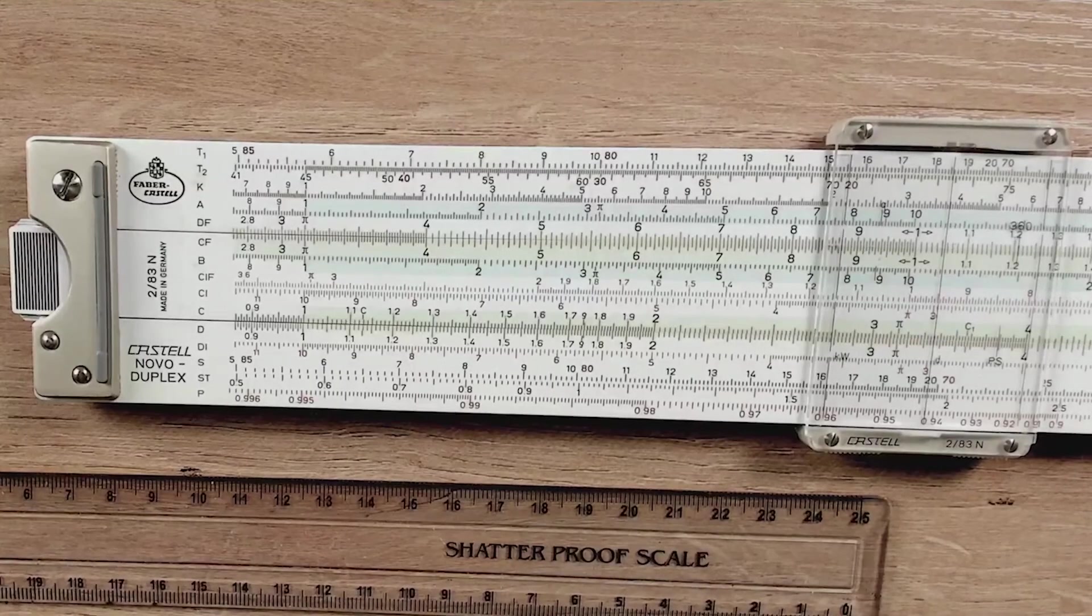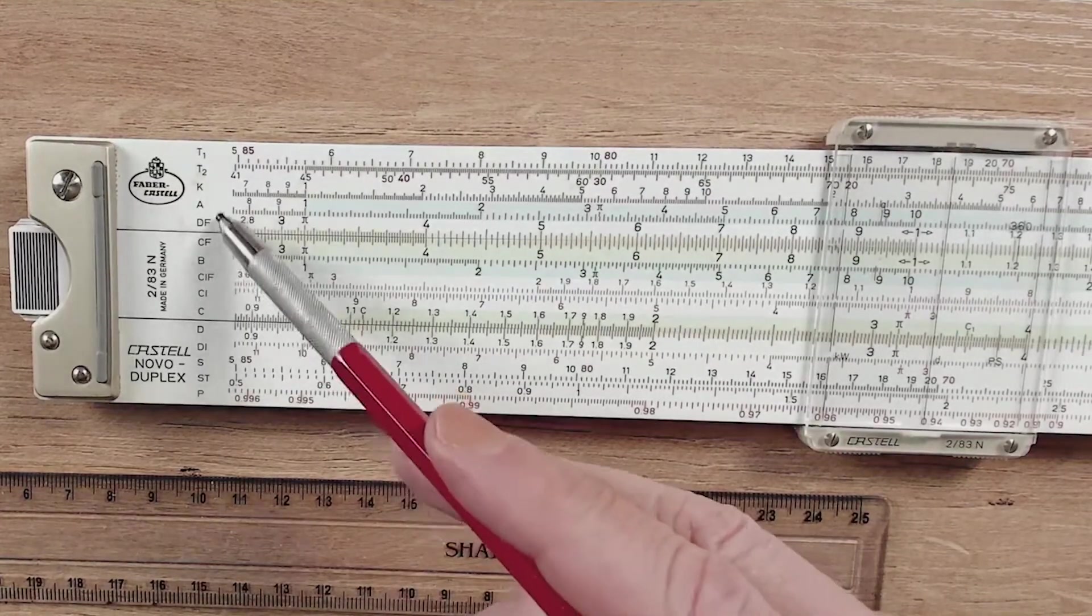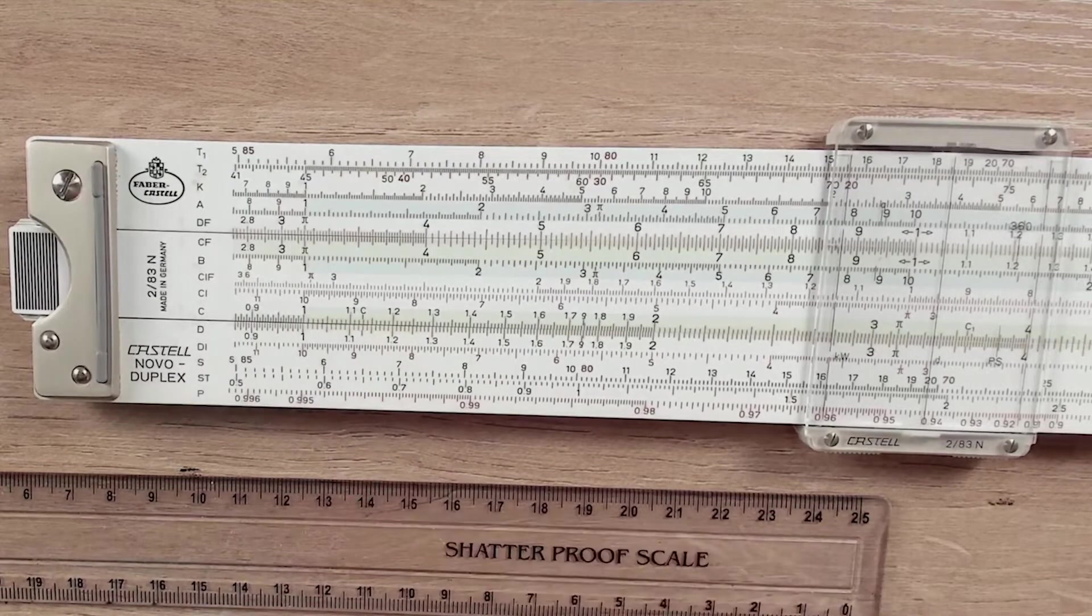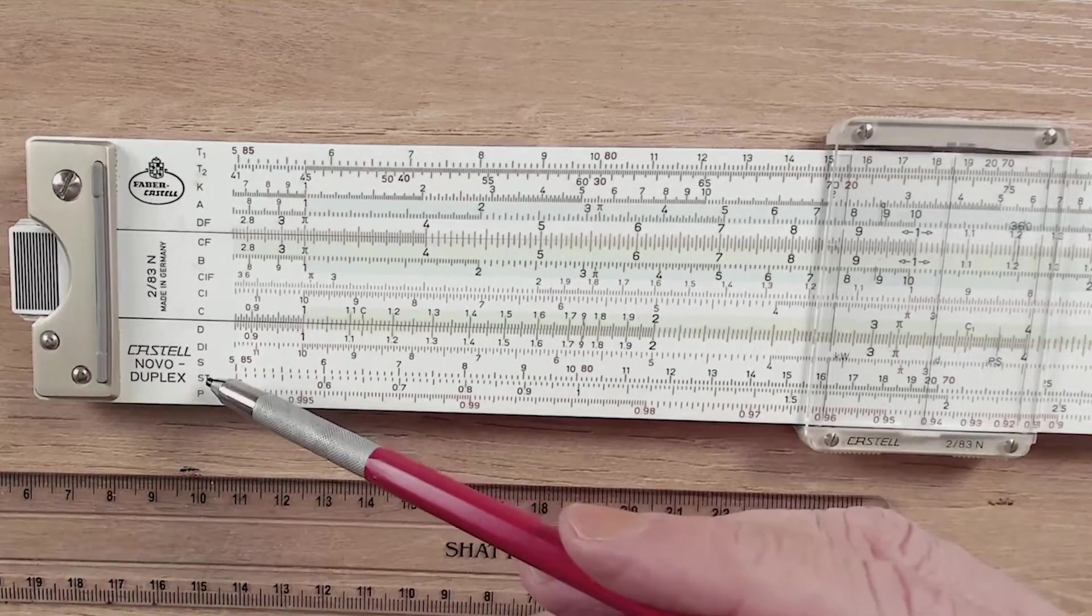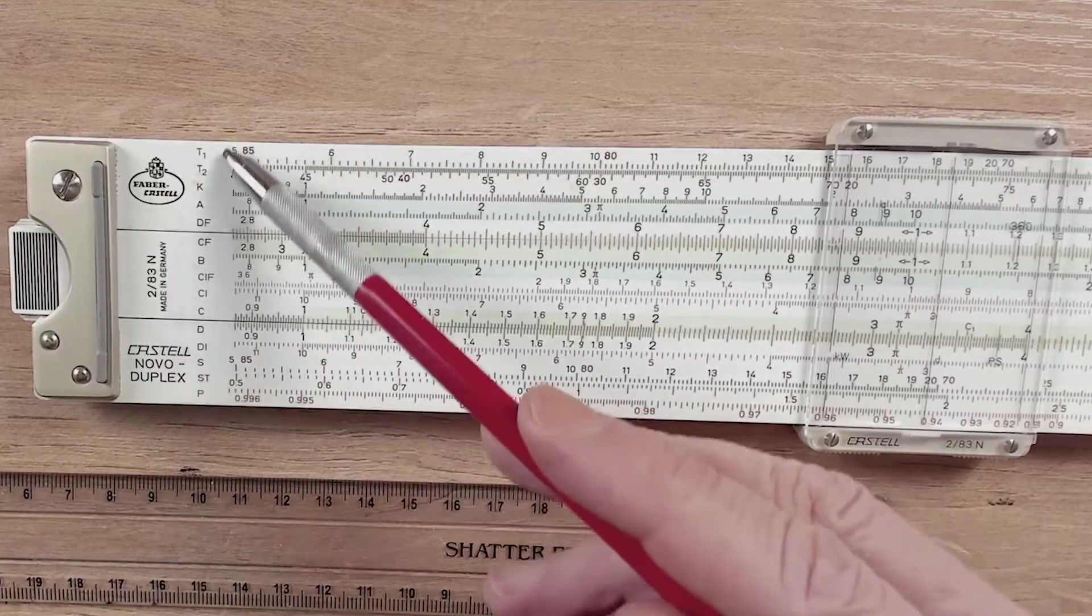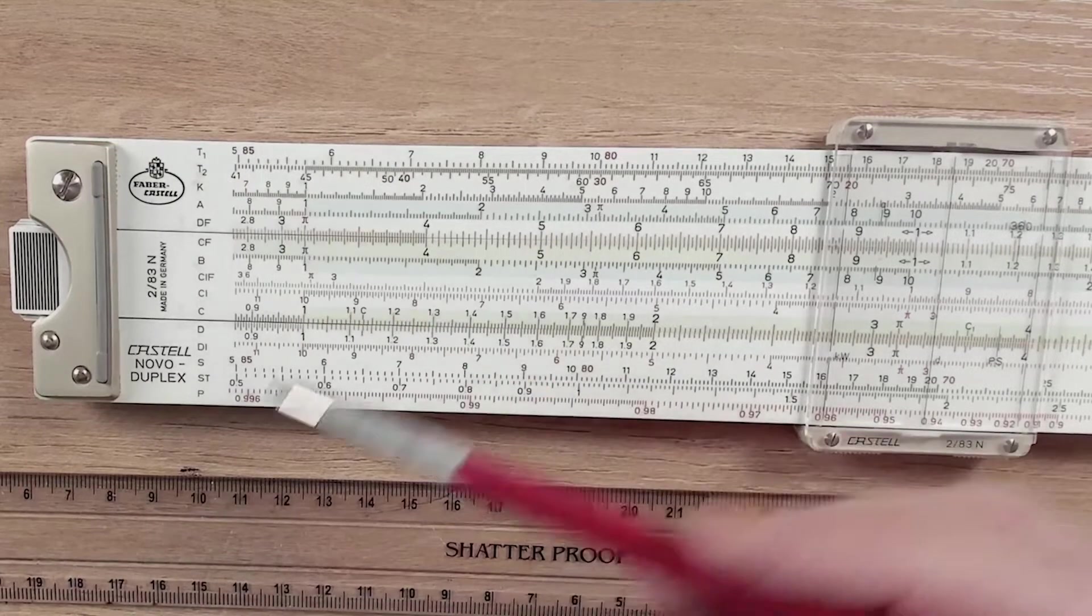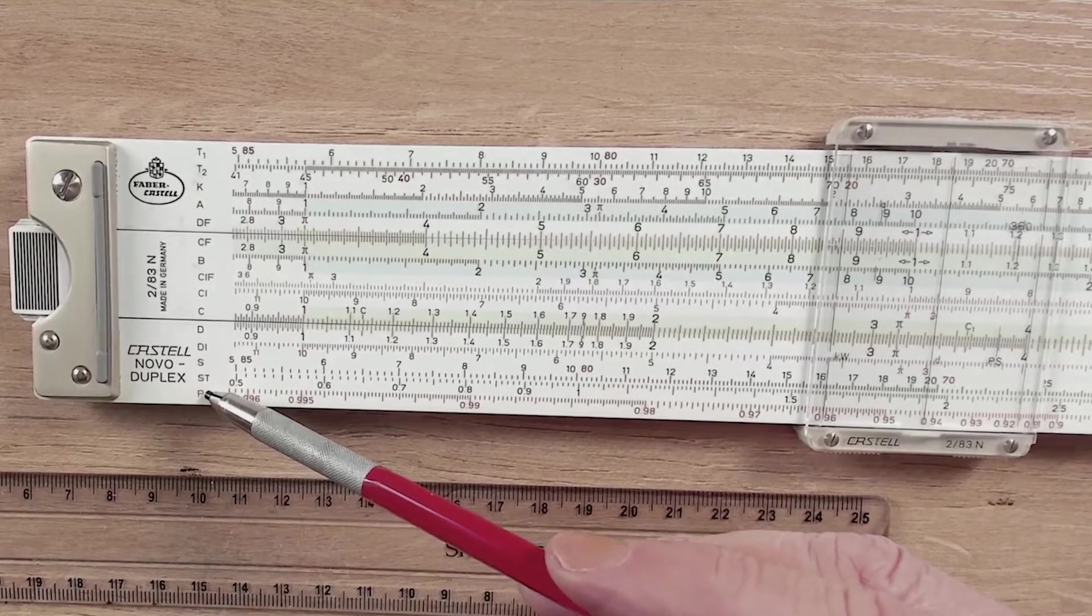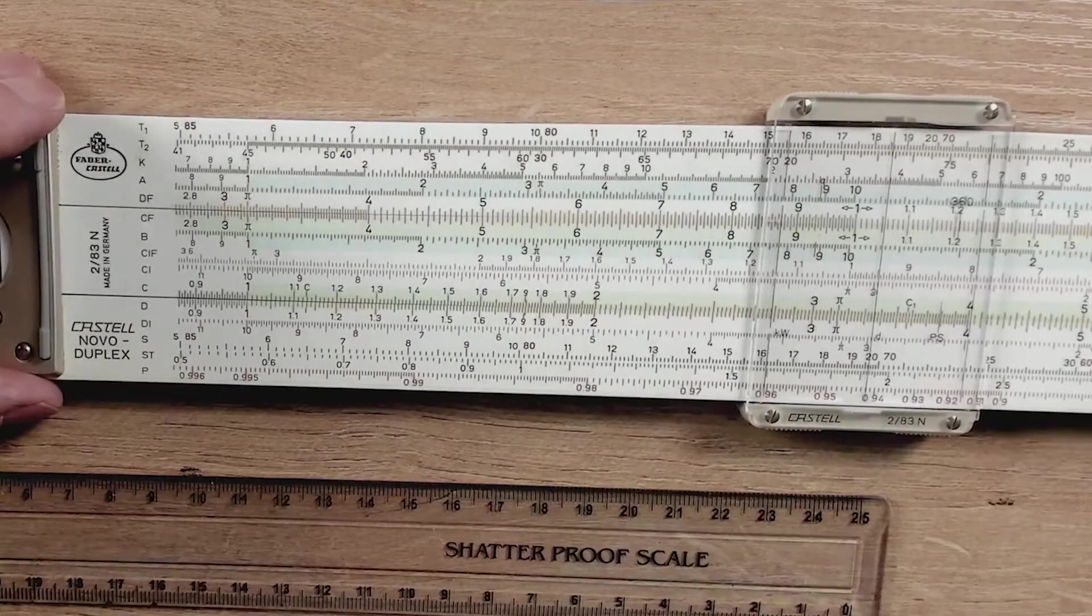Now the 283 has a lot of the standard scales that we've seen on the engineering rules. It's got the A and the B scale. It's got a couple of folded scales. It of course has a C and a D scale and a CI scale. Now the trigonometric scales are a little bit different. We have the S and the ST scale, which is the sine and the small angle scale. The T scale or tangent scale is split into two different sections and we have an additional scale down here called a P scale or a Pythagorean scale.